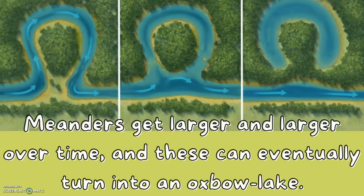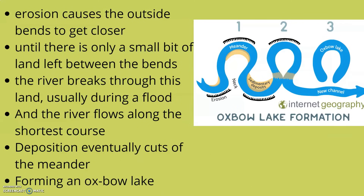Meanders get larger and larger over time and these can eventually turn into Oxbow Lakes. Step 3: How do Oxbow Lakes form?